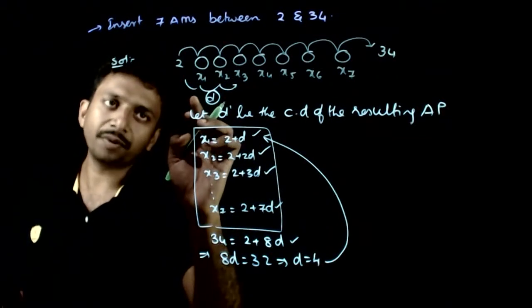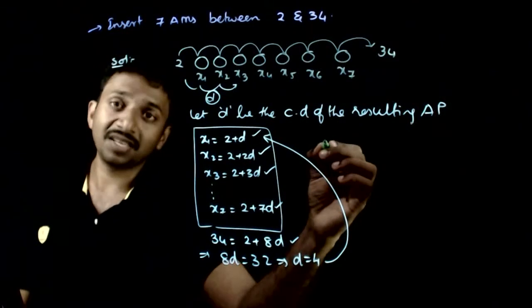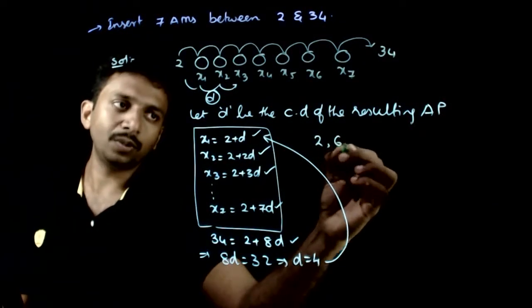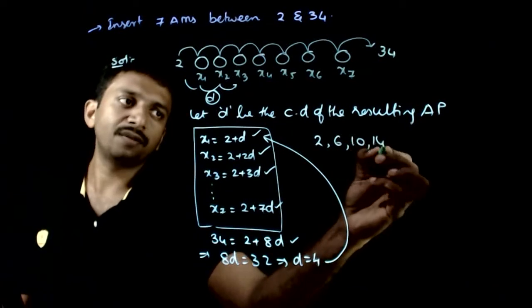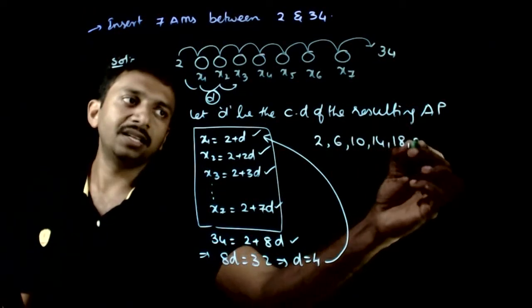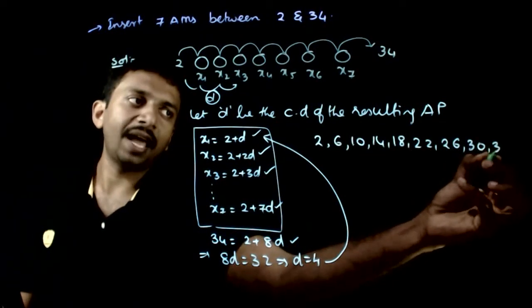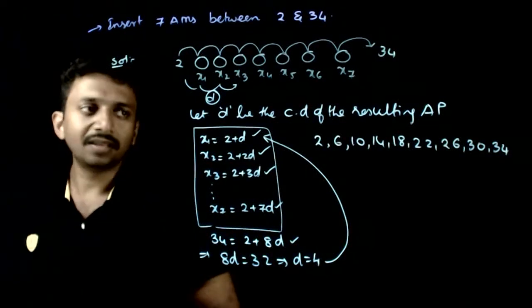x1, the common difference is 4. So x1, x2, x3, the sequence is 2, 6, 10, 14, 18, 22, 26, 30, and 34.